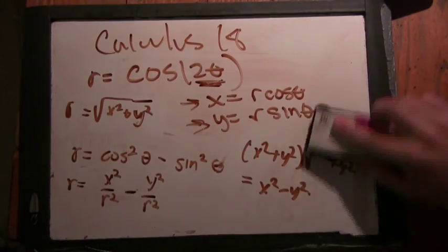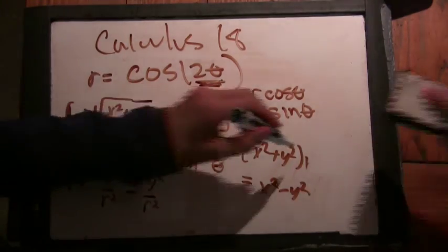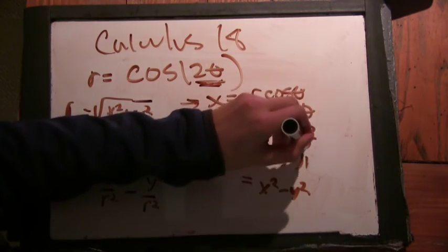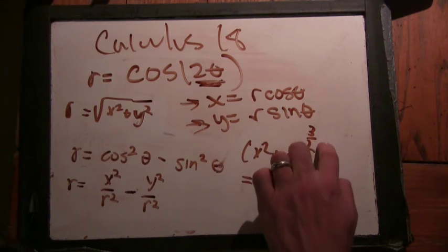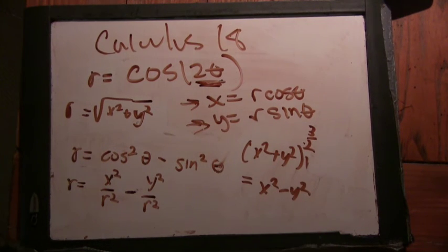That's right. Or if I just want to say x² + y² quantity to some power, what power is that? To the three halves. Here you go. So this is our equation. r equals cos(2θ) turns into (x² + y²)^(3/2) = x² - y².